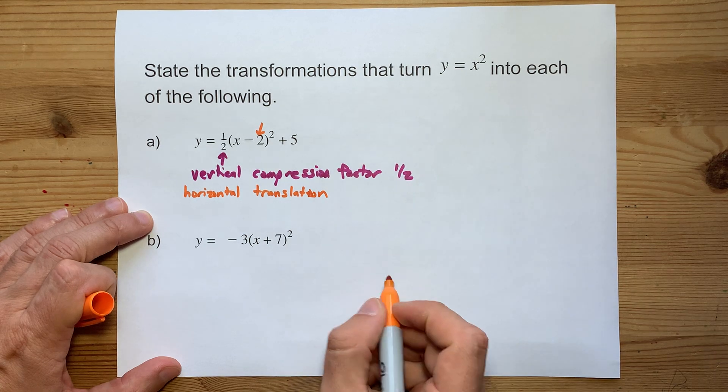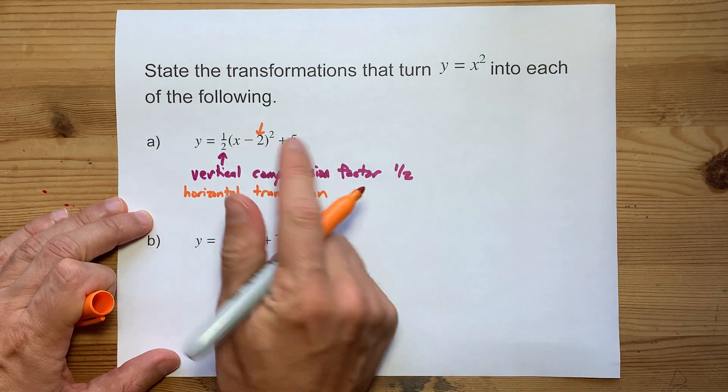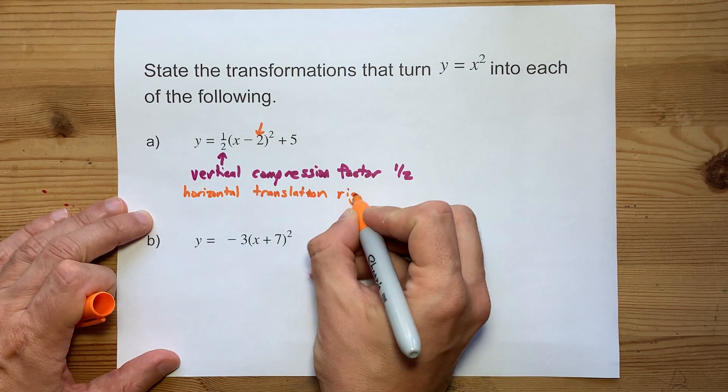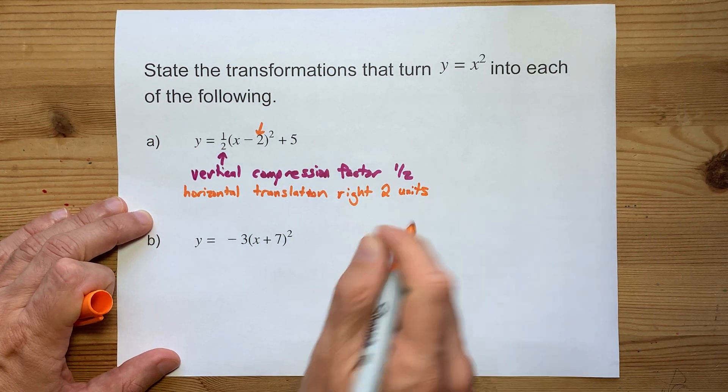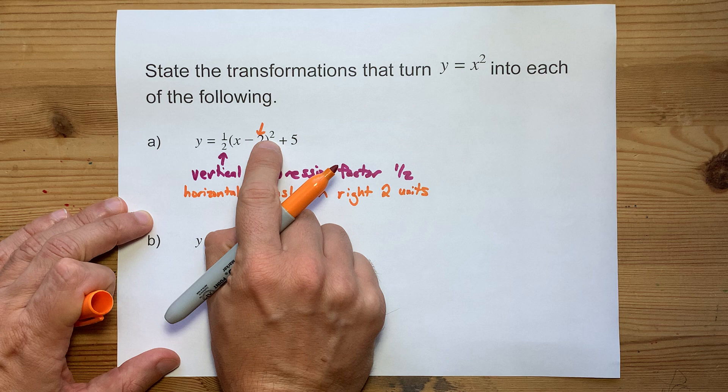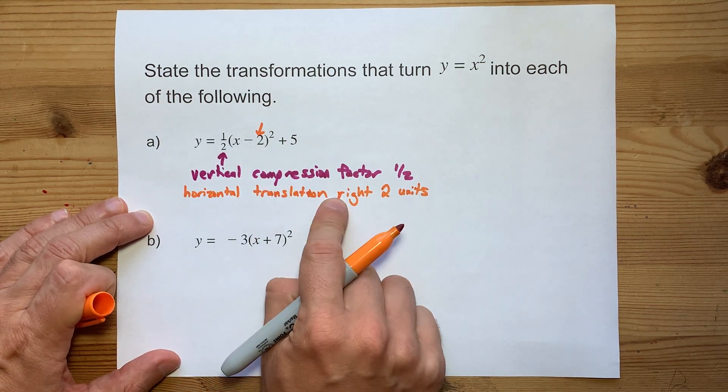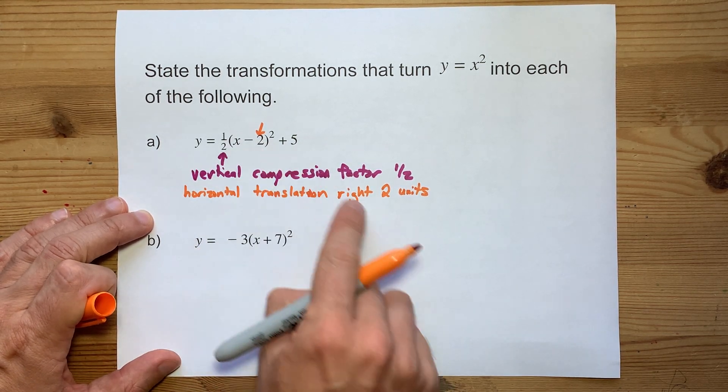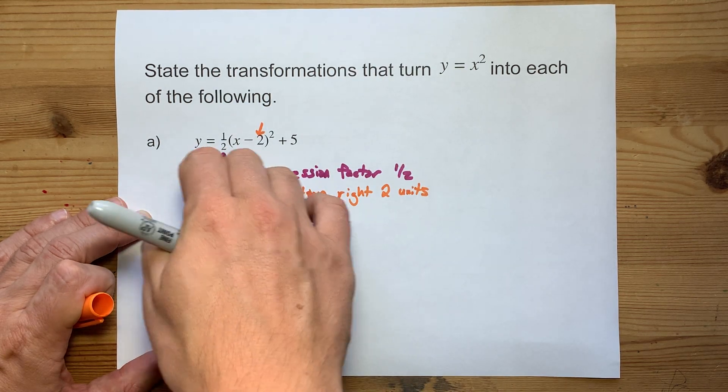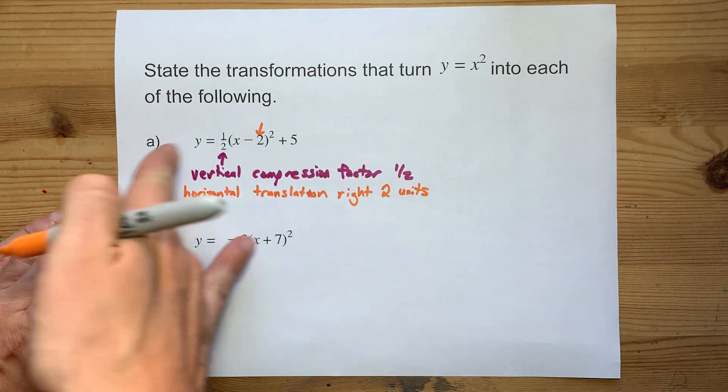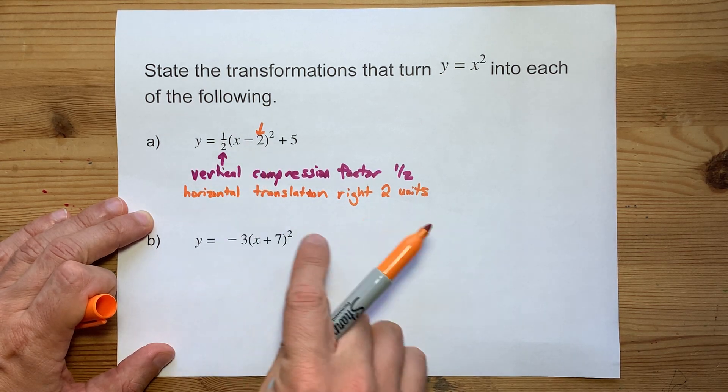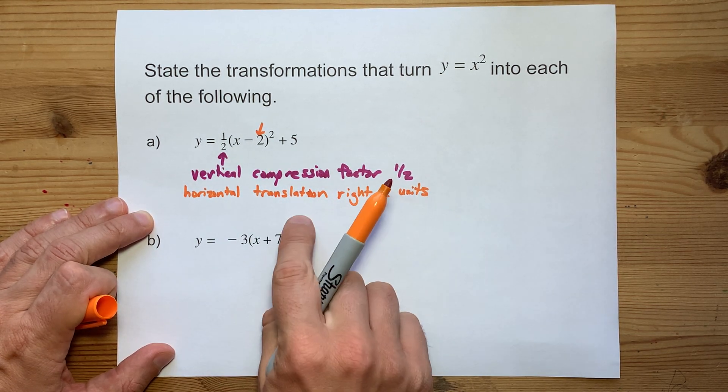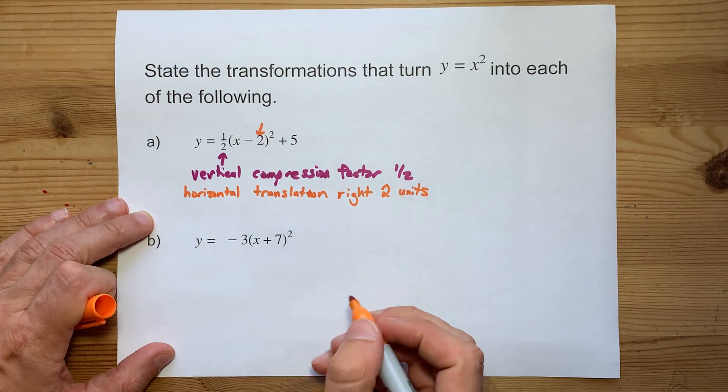So we're going to call this a horizontal translation. And minus 2 actually represents to the right by 2 units. x minus 2 in the brackets means you're shifting it to the right by 2. I know it's weird because if you look at the axes, negative is to the left of the y-axis. But here x has to be 2 higher, shifted to the right to compensate for the minus 2.